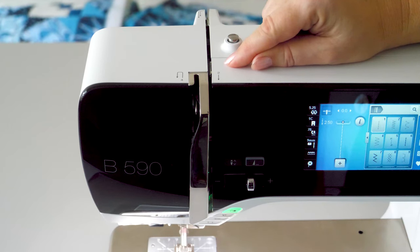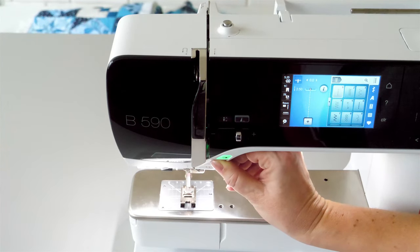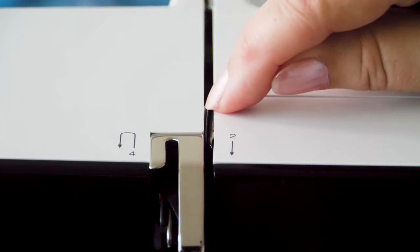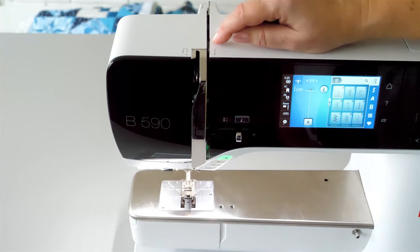Only when the presser foot is raised during threading can the thread lie between the tension discs and be detected by the upper thread tension. Lower the presser foot after threading is complete.